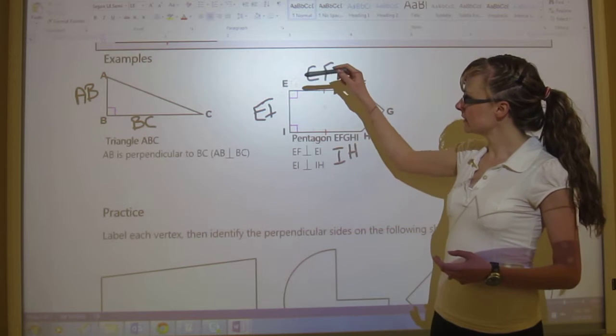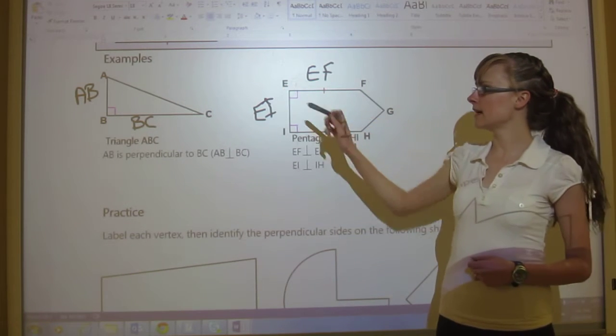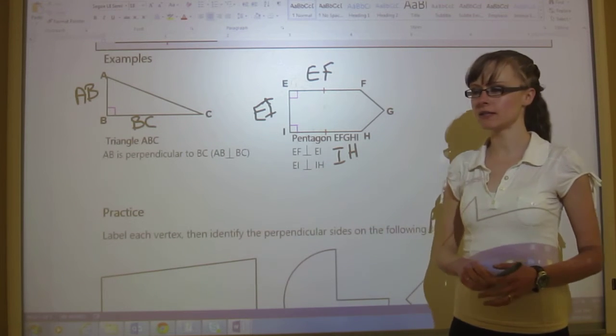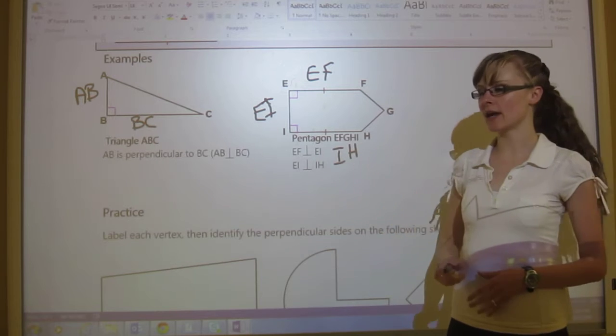So we've got that, oh that's not very good writing, EF is perpendicular to EI. Right there, that first one. EF is perpendicular to EI. And the other one is that EI is perpendicular to IH.